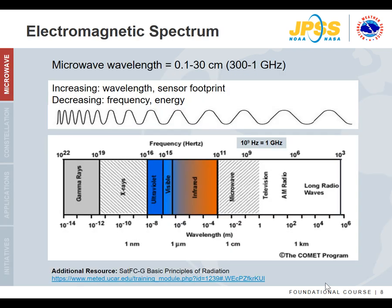This slide orients the microwave region within the electromagnetic spectrum. Note that the wavelengths in this region are on the order of centimeters. Wavelength increases from left to right, which is what the operational community uses for units in the infrared. Radiation can also be expressed in terms of energy or frequency, which is inversely proportional to wavelength. From the IR perspective, frequency is backwards, and for historical reasons it is most common to use frequency rather than wavelength as a unit, often expressed in gigahertz.